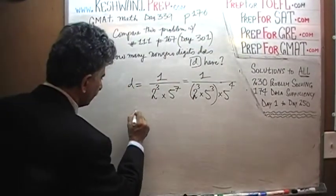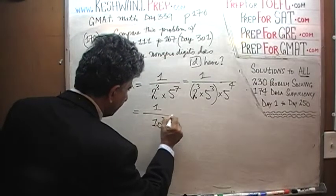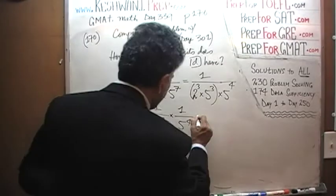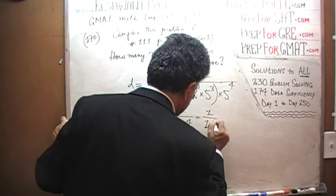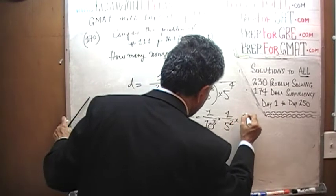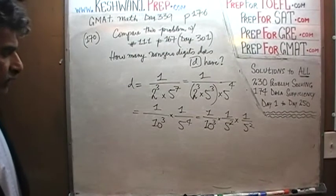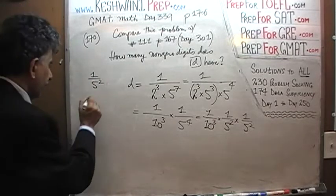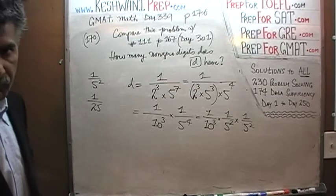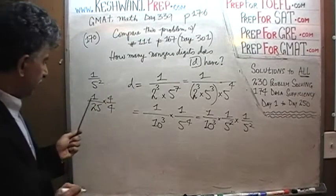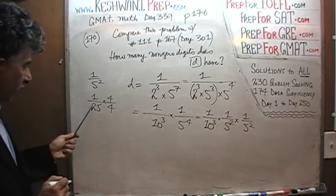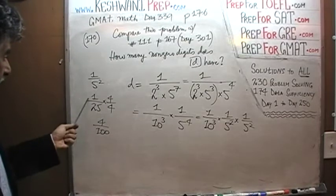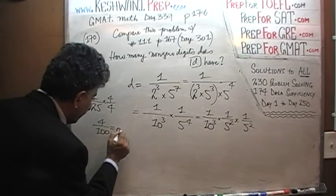Let's start from here for more room. We can write this as 1/10³ × 1/5² × 1/5². Now let's find out what 1/5² is. 1 over 5 squared is 1 over 25. 1 over 25 is the same as 4 over 100 — you multiply top and bottom by 4. So 1/25 equals 4%, which we can write as 0.04.